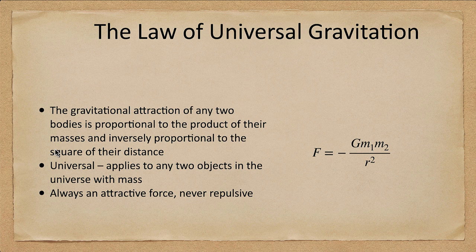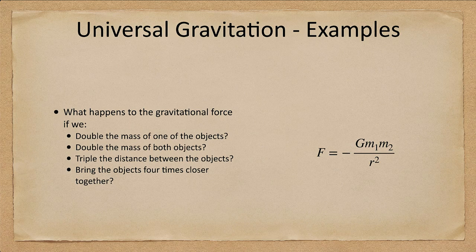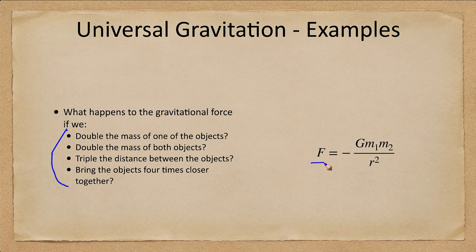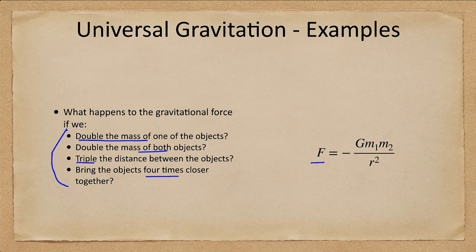Now we could look at a couple of examples here. What happens with this equation if we do a few things? So these are some of the things that are reasonable to expect. We can look at things like what happens if you double the mass of one or both objects? What if you triple the distance between them or bring them four times closer together? Let's look at those examples briefly.